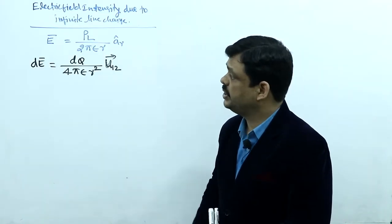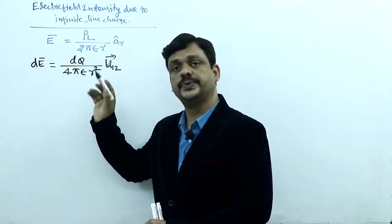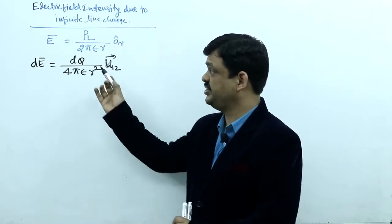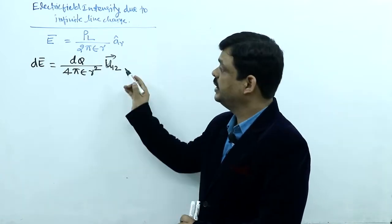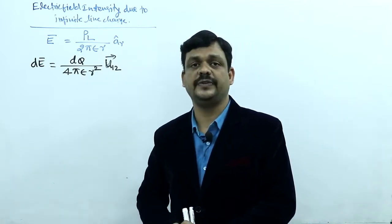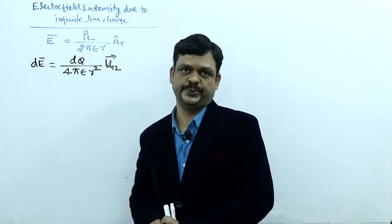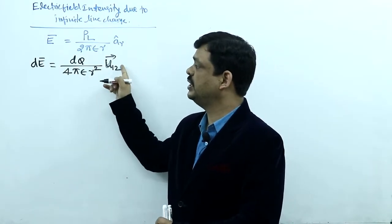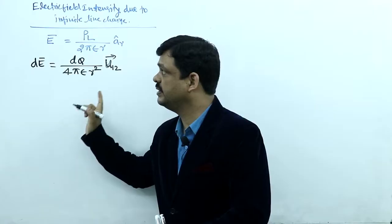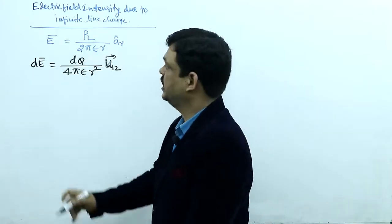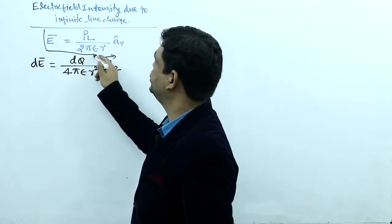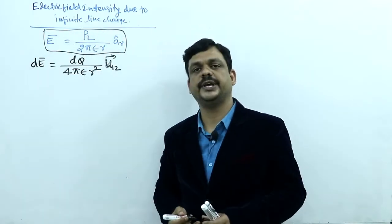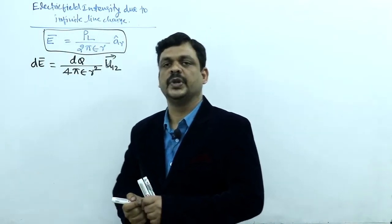In this equation, first we have to find dq, then we have to write the unit vector u12, and later the distance. After substituting all these values into this equation, we will get E = ρL / (2πεr), the electric field intensity due to infinite line charge.